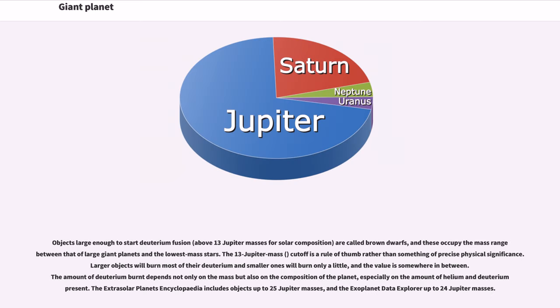Objects large enough to start deuterium fusion, above 13 Jupiter masses for solar composition, are called brown dwarfs, and these occupy the mass range between that of large giant planets and the lowest mass stars. The 13 Jupiter mass cutoff is a rule of thumb rather than something of precise physical significance. Larger objects will burn most of their deuterium and smaller ones will burn only a little, and the value is somewhere in between. The amount of deuterium burned depends not only on the mass but also on the composition of the planet, especially on the amount of helium and deuterium present. The extrasolar planets encyclopedia includes objects up to 25 Jupiter masses, and the exoplanet data explorer up to 24 Jupiter masses.